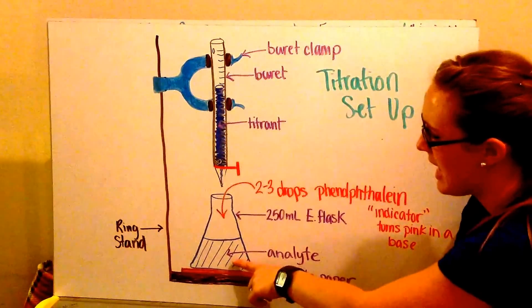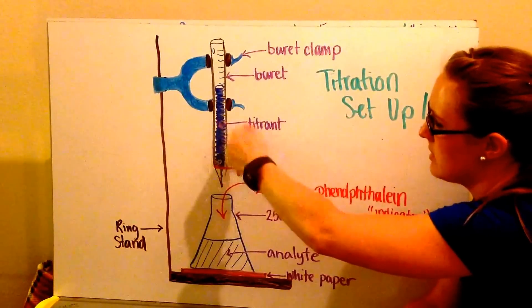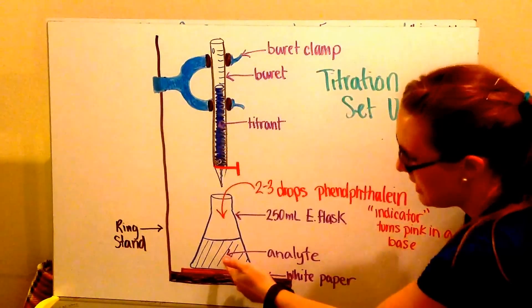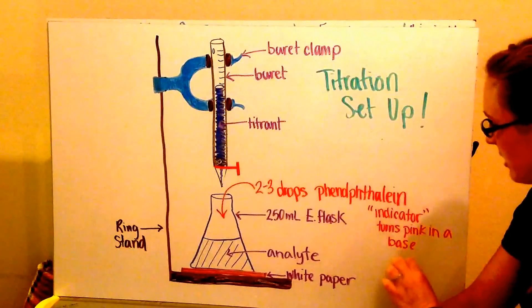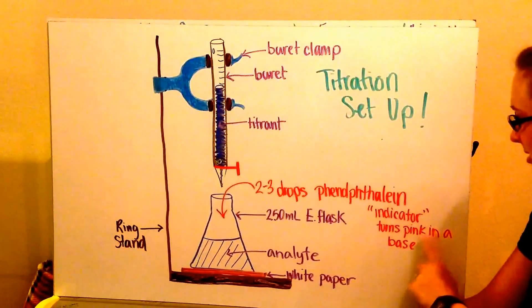Our analyte is going to be an acid and our titrant a base. We're going to add titrant into our analyte until it just becomes barely basic and our indicator turns just the lightest shade of pink.